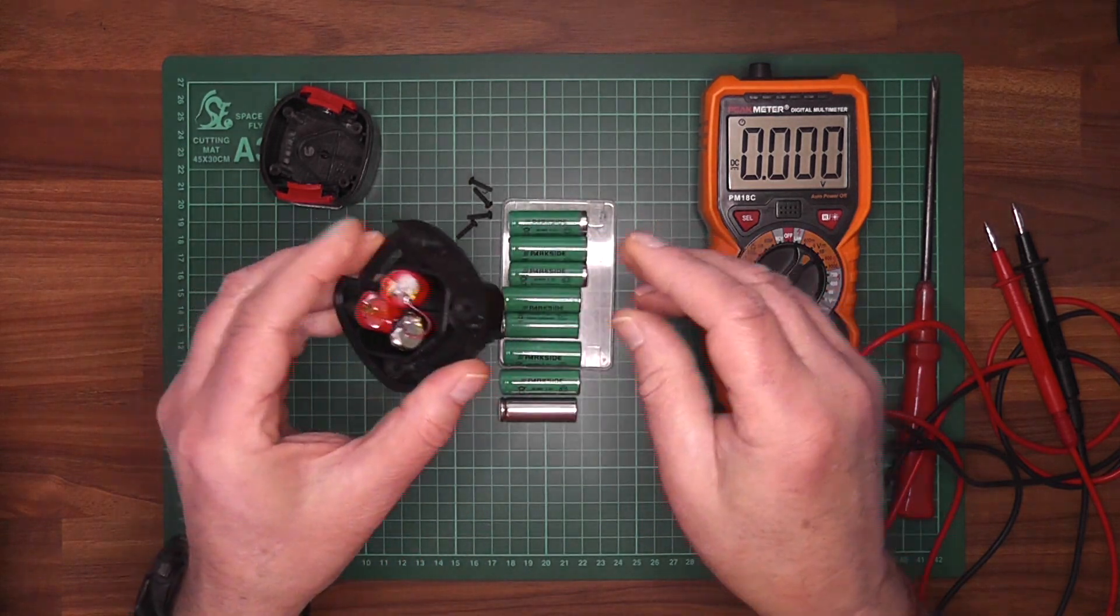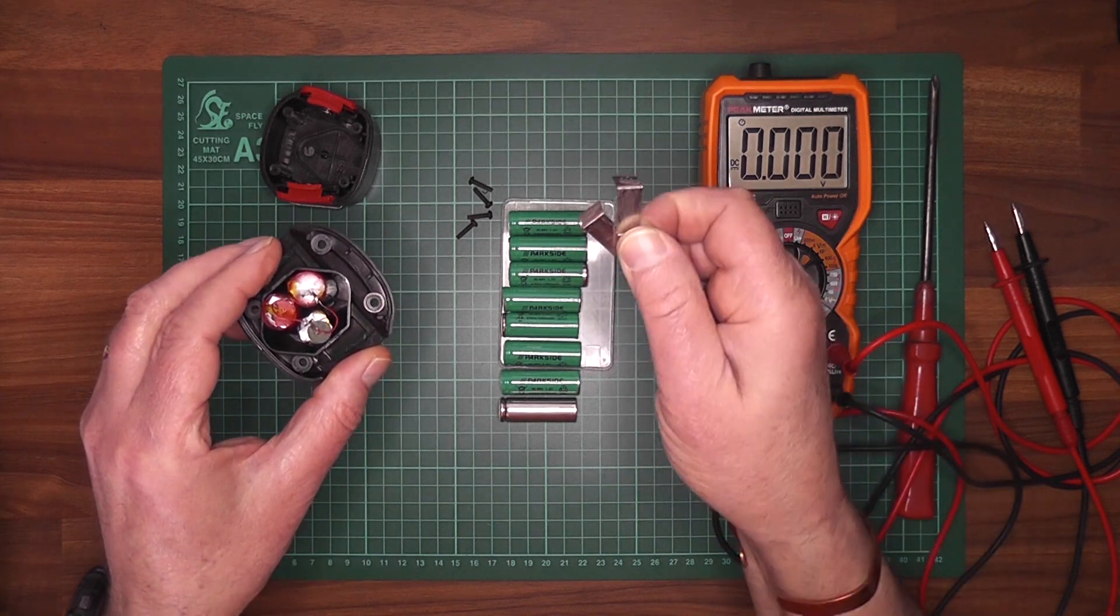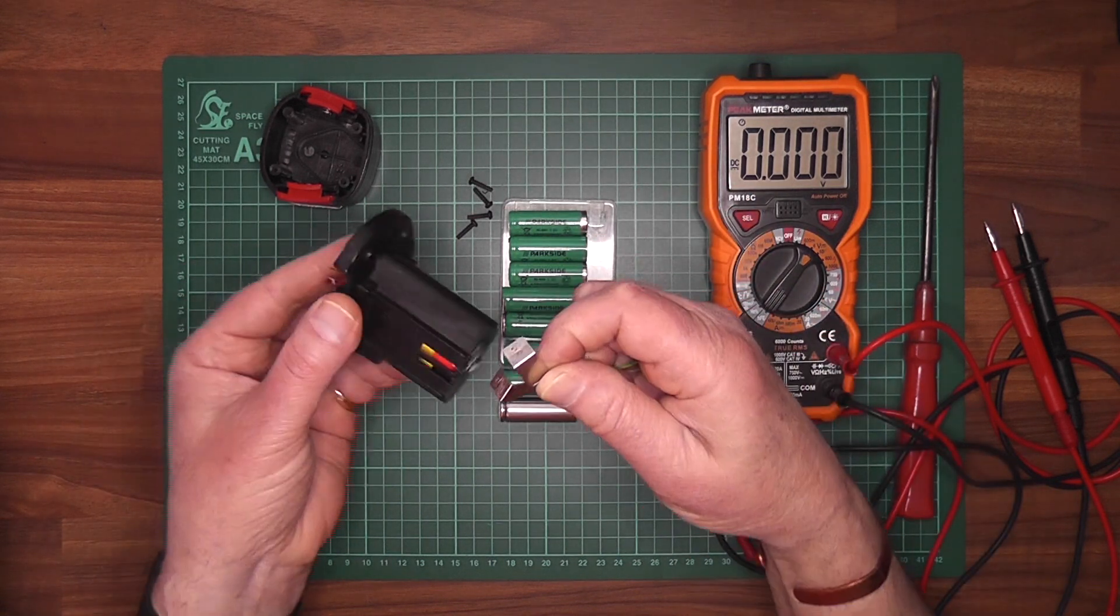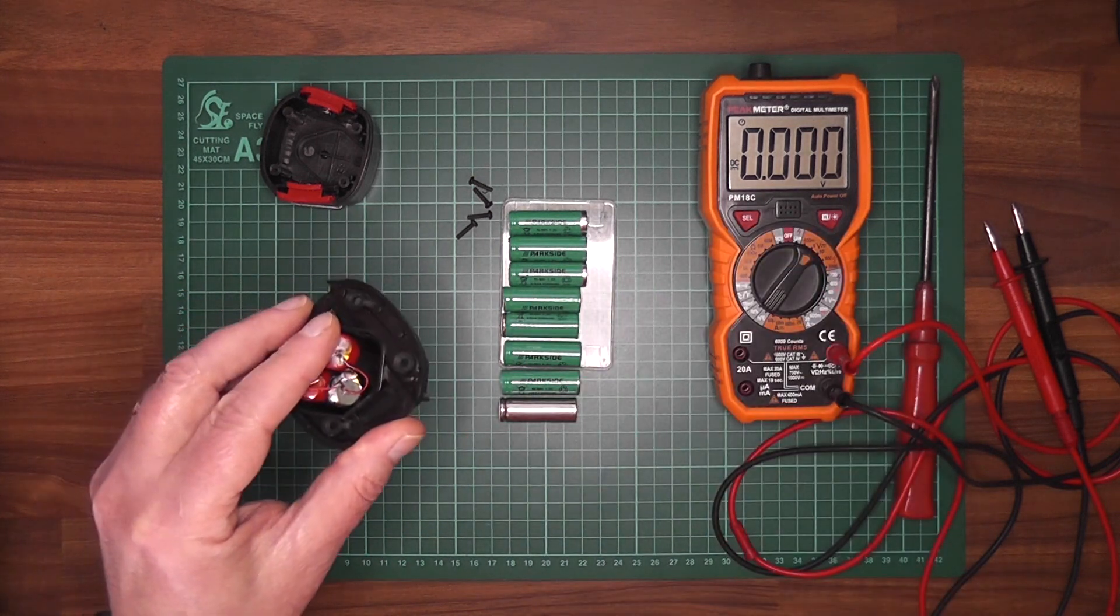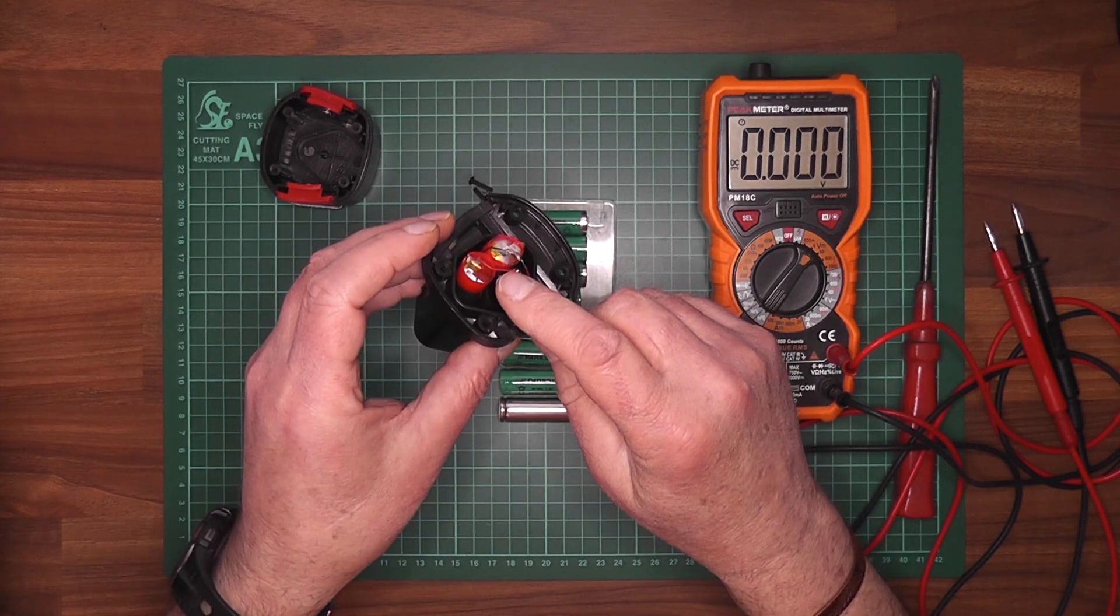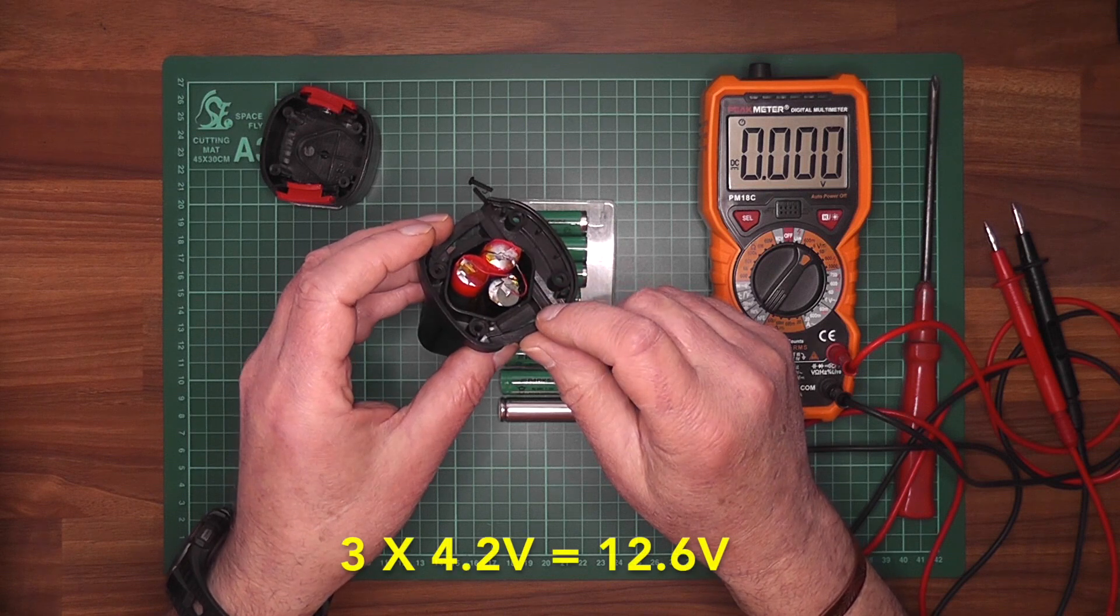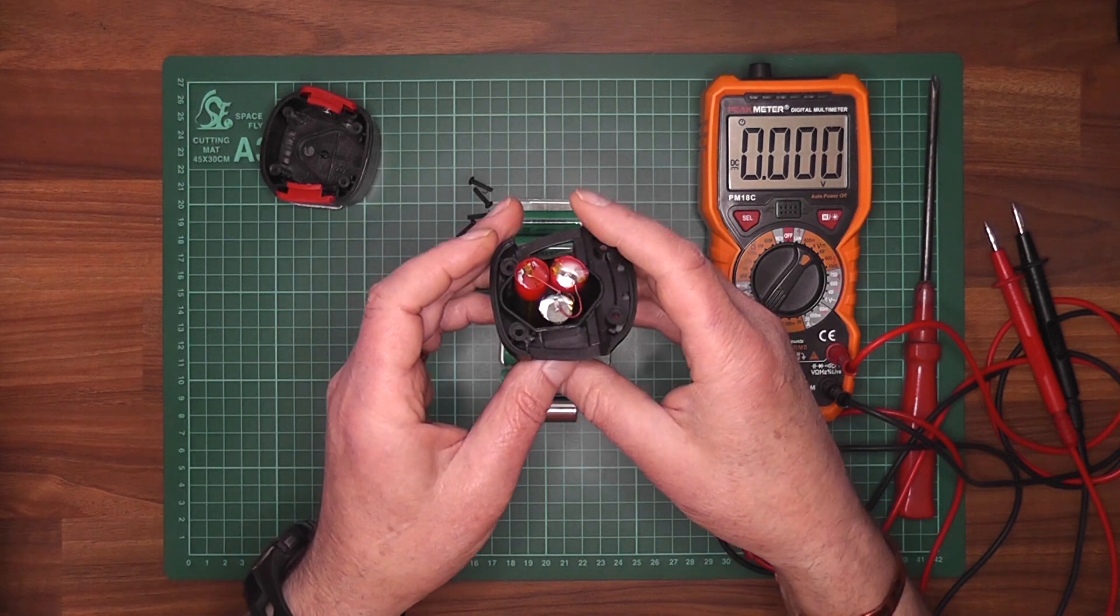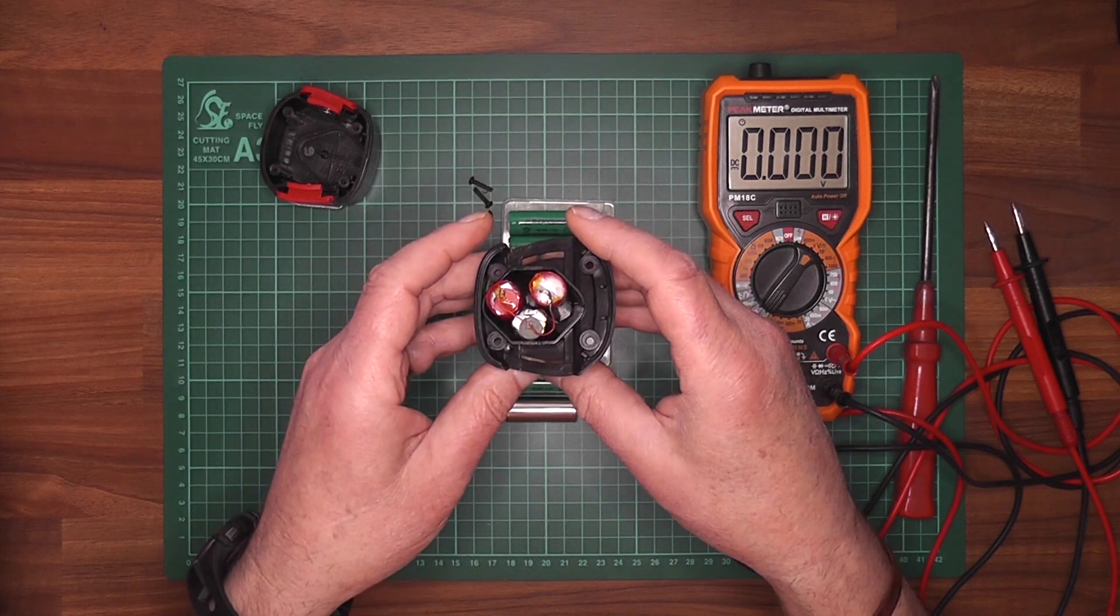So as I said, these little connectors, one goes down here and the other one goes over the other side, so we'll sort that out. Now when this is fully charged, these will charge up to 12.6 volts, and that should be quite capable of running the Dremel.